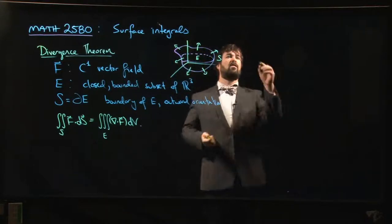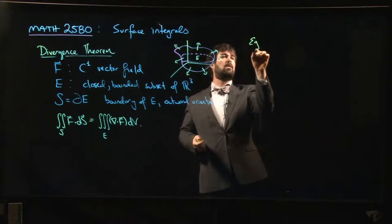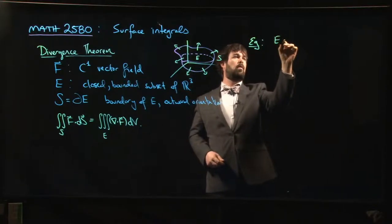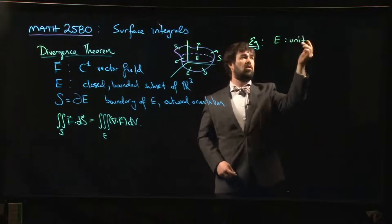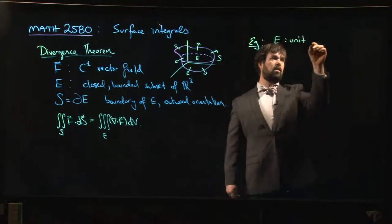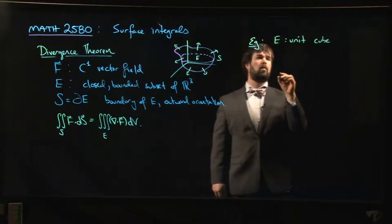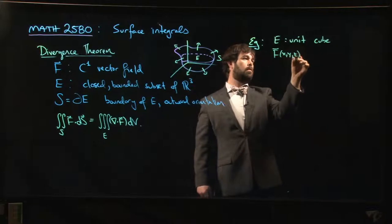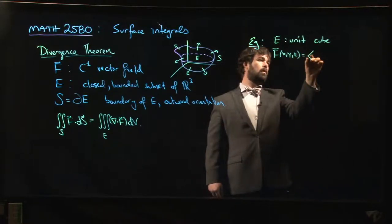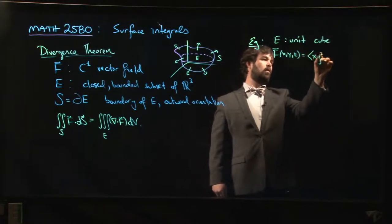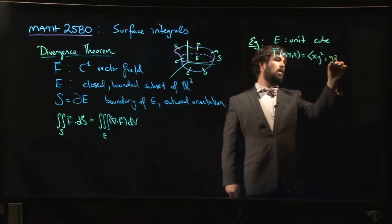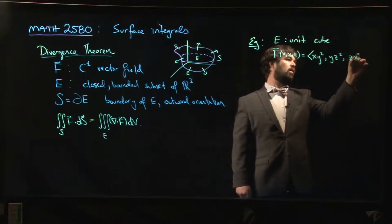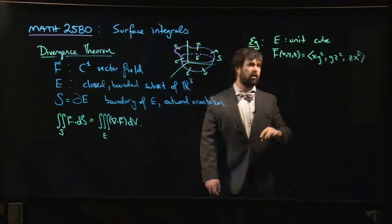So as a quick example, remember that we did this example where E is the unit cube, but we were working with the boundary of E, so E is the unit cube, and we said that our vector field F was (x, y², y, z², z, x²), okay? That was our vector field.